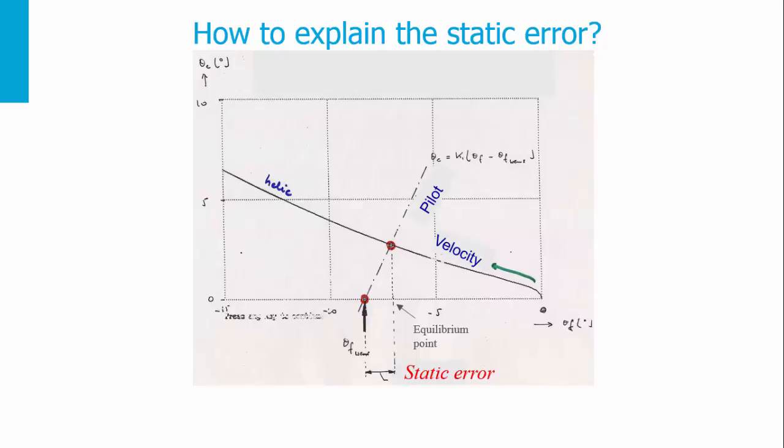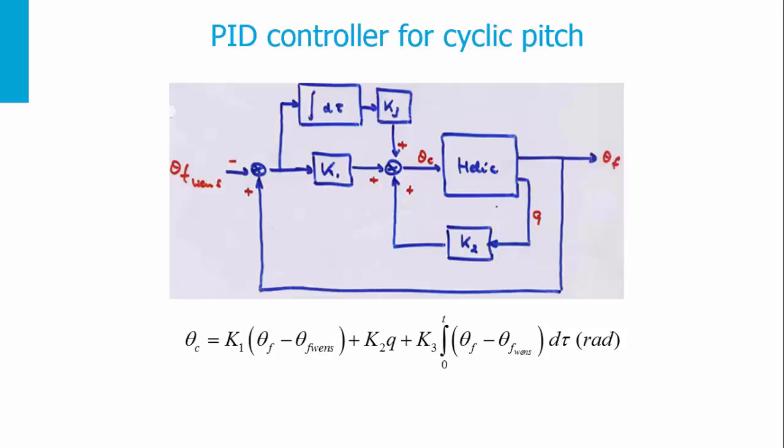We need to correct this equilibrium point in the P controller by adding an I (integral) action. The I controller must eliminate constantly the proportional offset introduced by the P controller. We add an integral of the P controller output, continuously changing the input until the error is reduced to zero. The PID controller for cyclic pitch using the I action moves the pilot's line with a static error correction so that we achieve the desired theta F.